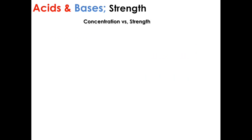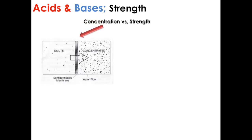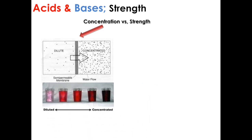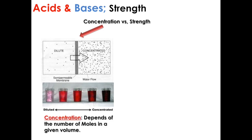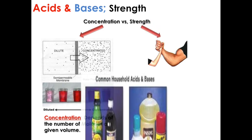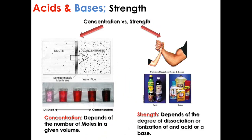We usually find a kind of confusion between concentration and strength. When we talk about concentration, we are talking about the particles that are in the solution. As we can see in this drawing of a drink, the lighter or less concentrated it is, you will see less color; the more concentrated, it will be darker, because it has more particles. So concentration depends on the number of moles in a given volume. Strength, on the other hand, as we already saw for acids and bases, depends on the degree of dissociation or ionization of the acid or base.